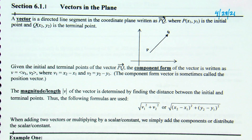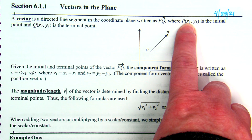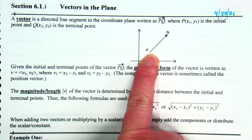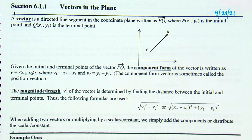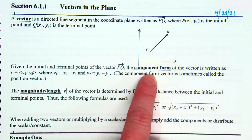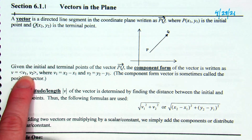We're going to talk about the direction of these vectors and the length of the vectors. It is important how you name these, or which point is which. Point P is the initial point — the one that is an endpoint. The one that is on the end of the arrow is the terminal point. One of the things we're going to talk about today is finding component form for a vector.